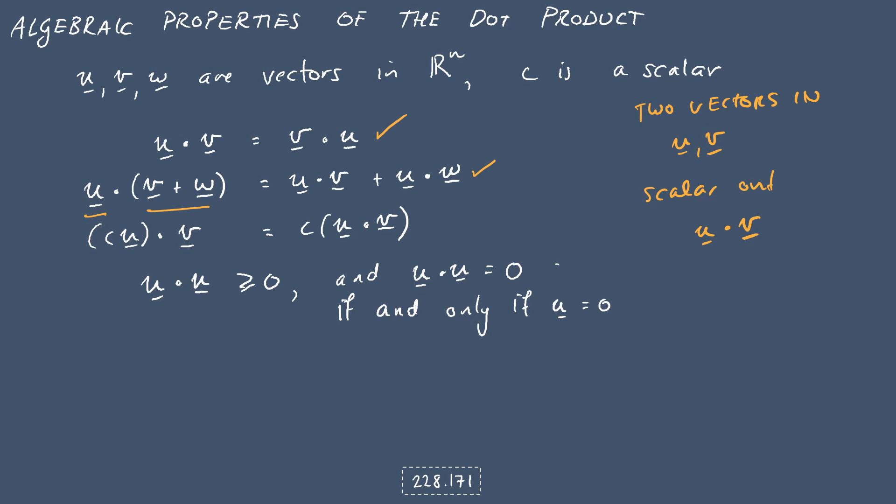So notice here on the left we've got a dot product with a vector and another vector, which should give us a number. As a sanity check on the right, we get two dot products, which also give us two numbers added together, which is also a number. So we haven't done anything weird here. If you've got a scalar multiplying one of the vectors, you can bring that scalar outside the dot product.